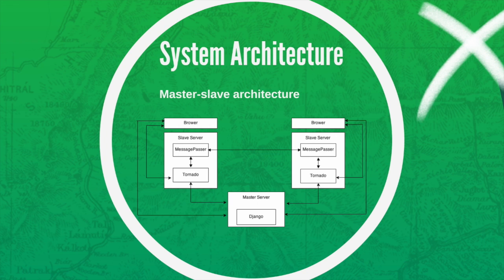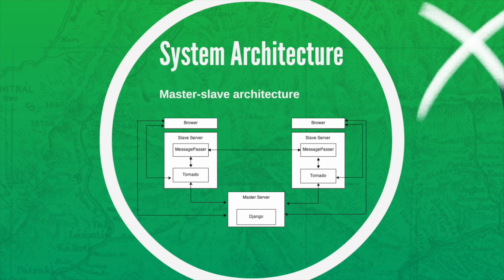Now I will talk about our system architecture. We employed a master-slave architecture to implement our system. The master server accepts game requests from the players, stores the information of the players, and multicasts every player's game options to every slave server. The slave server contains two modules: the Tornado server, which interacts with the master server and the browser, and the message parser, which is in charge of multicasting user ID and distance to other slave servers.